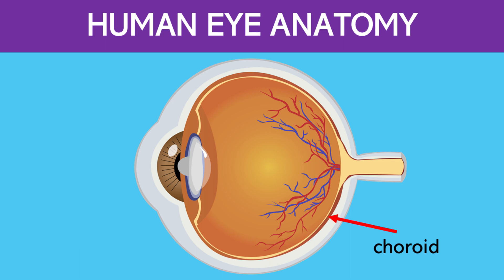This is the choroid. This is the layer of blood vessels between the retina and the sclera. It supplies oxygen and nutrients to the retina.